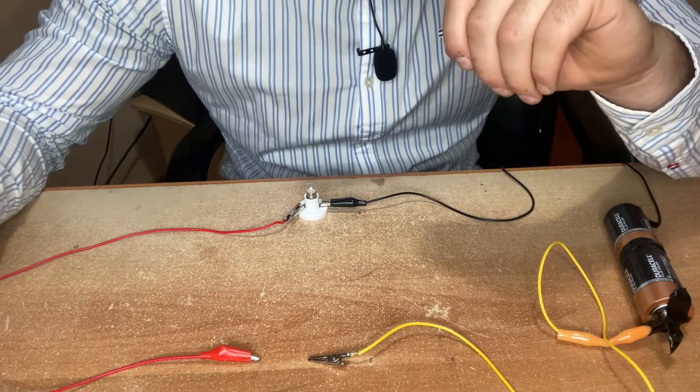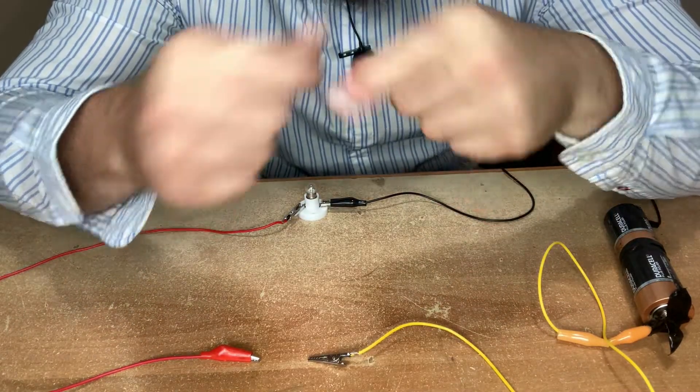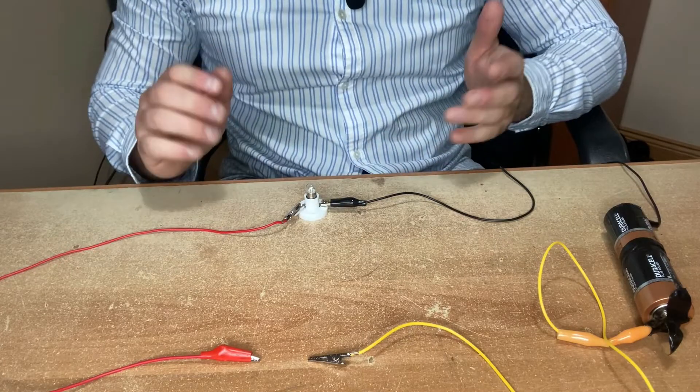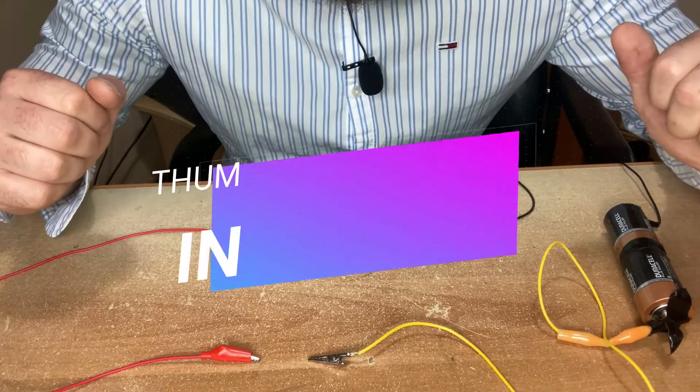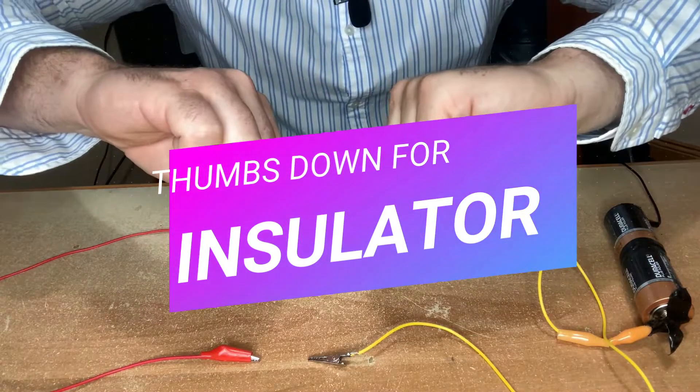Let's make this fun. If you think the object I'm about to test is a conductor and the light bulb will switch on, put your thumbs up. If you think it's an insulator and the light bulb won't switch on, put your thumbs down.